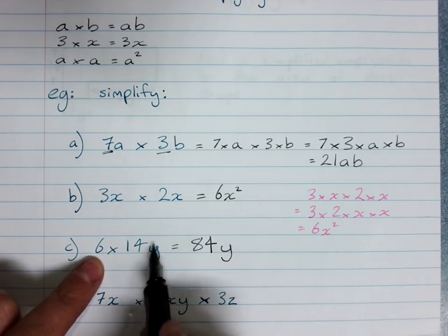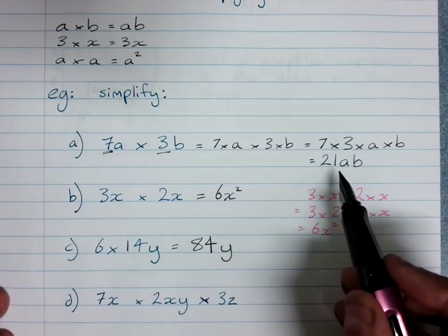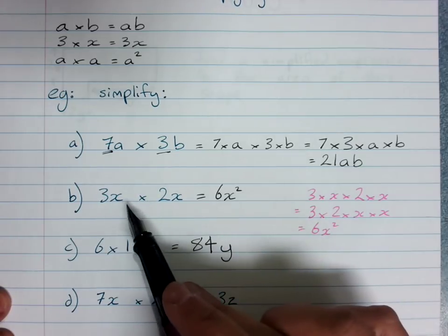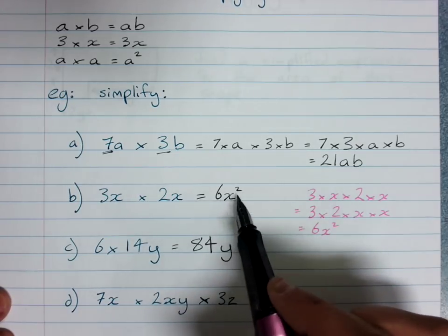See there's only one pronumeral, so we can always keep track of where the pronumerals are. There was an a and a b here, an a and a b here, x times x here, x squared there.